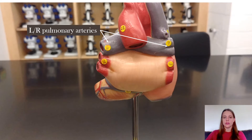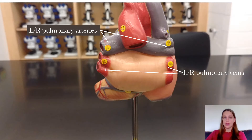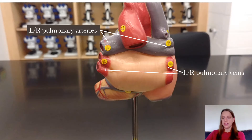From there it returns to the heart in the left and right pulmonary veins. A lot of people get confused as to why the left and right pulmonary arteries are blue, meaning that they're deoxygenated. Arteries just means blood is going away from the heart — it has nothing to do with being oxygenated or deoxygenated. So in systemic circulation the arteries will be oxygenated, but in pulmonary circulation it's reversed.